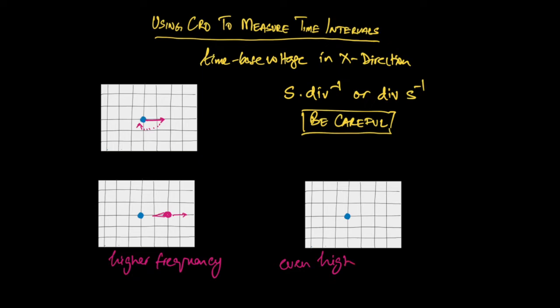But what if it goes at an even higher frequency? Would we expect the shape of this trace to change? In fact, yes we would. If it goes fast enough, you would basically see a trace which looks like a stationary line because it's moving so fast. The fluorescence essentially lasts long enough for the spot to appear like a continuous line.